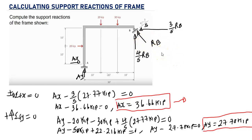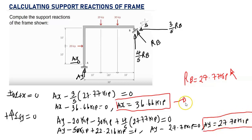To summarize the support reactions: the inclined reaction ROB = 27.77 kip acting upward; the horizontal reaction AS = 36.66 kip acting to the right; and the vertical reaction AY = 27.78 kip acting upward.